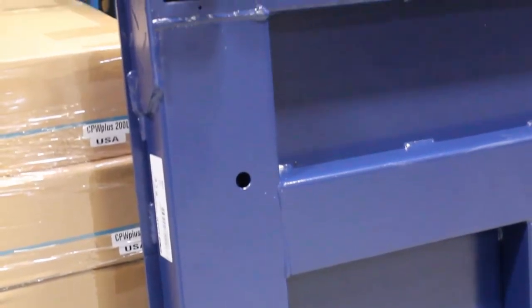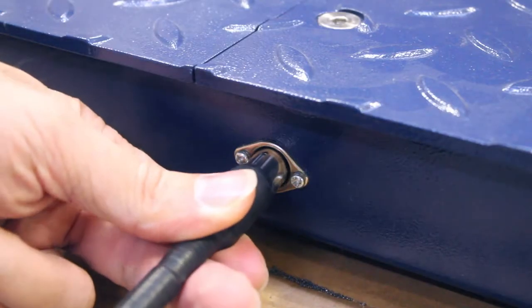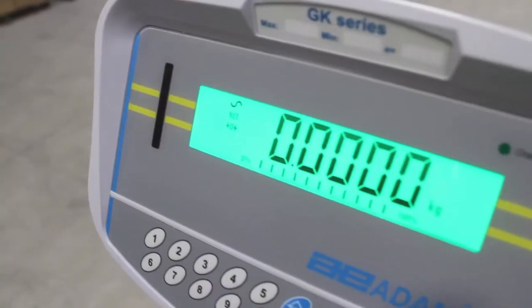The PT is supported by a reinforced frame beneath the platform, allowing the scale to accommodate substantial loads. The PT comes with a 10-foot long shielded cable and is compatible with a variety of indicators.